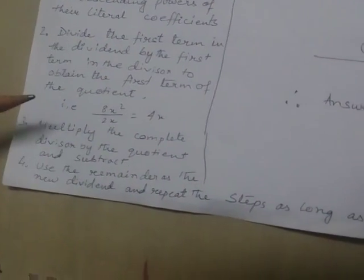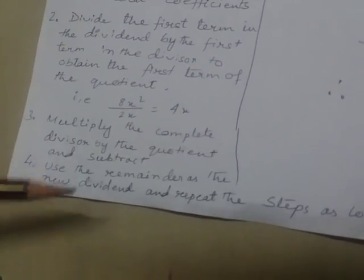Third step: multiply the complete divisor by the quotient and then subtract. Fourth step: use the remainder as the new dividend and repeat the steps as long as required.